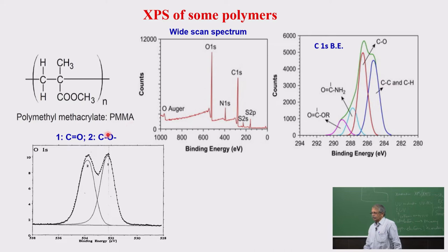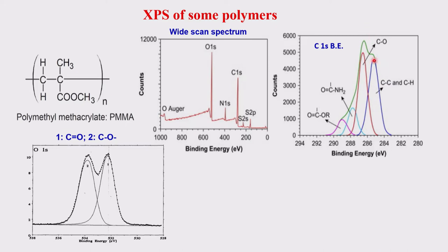How do we analyze this? If you look at the carbon spectrum, the green envelope is the measured spectrum. The blue, red, lighter blue, and purple curves are the deconvoluted spectra. Depending on the humps in the envelope, you deconvolute to get individual peaks — one peak here, another here, another as a shoulder, and another. So you get four deconvoluted peaks.